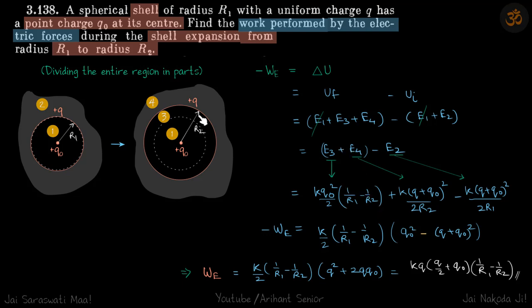Then region 4, outside that is K, so here we are going to count this charge also plus Q. So K(Q0 plus Q) whole square by 2R2. And for region E2, it's K(Q plus Q0) square by 2, by 2R1.